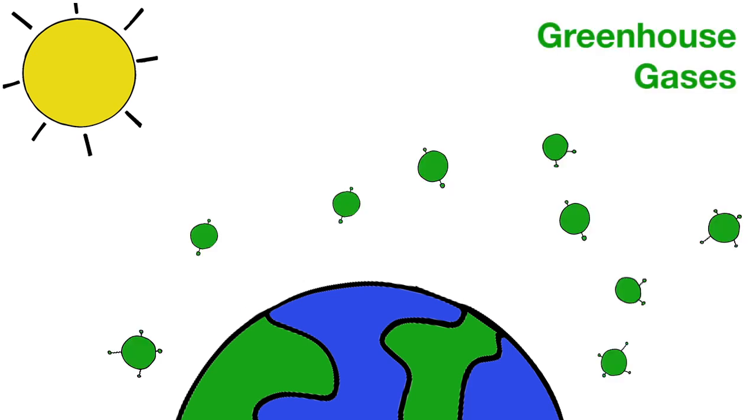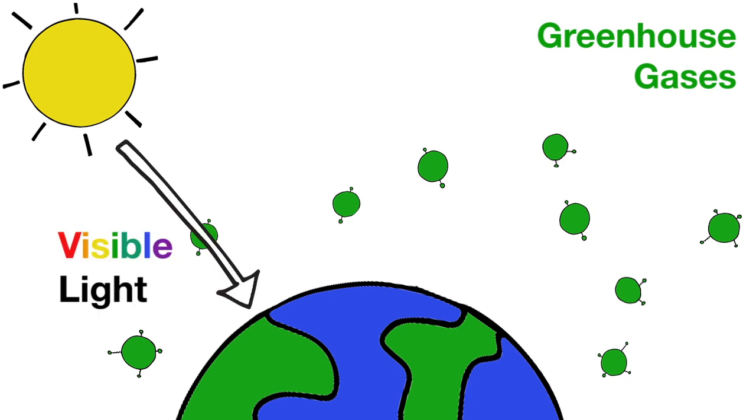Greenhouse gases in the atmosphere, such as methane and carbon dioxide, let visible light pass through but absorb infrared light, causing the atmosphere to retain heat. This energy can be absorbed and emitted by the atmosphere many times before it eventually returns to outer space.